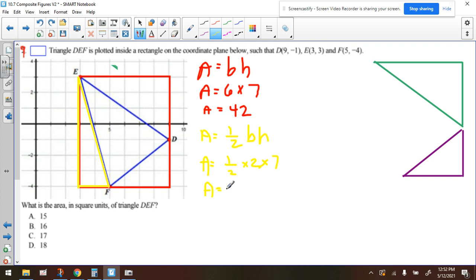So if we take half of two and then multiply it by seven, or we can just do two times seven, which is 14 and take half of that. Either way, we're going to get the answer. So if we do it this way, we would do one times seven, and then I'm getting seven square units for the yellow triangle.